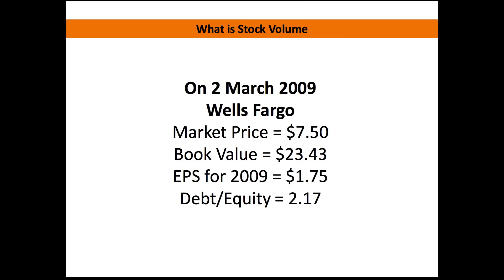Let's look at the numbers on Wells Fargo back on that day of enormous volume. The market price was $7.50. The book value on the company was $23.43. The earnings per share back in 2009 was $1.75, so it wasn't even in a negative EPS situation — it was positive, and they were also paying a dividend. The debt to equity was 2.17. Now, I know I've said you want to find a company with a debt to equity below 0.5, but in the finance sector this is actually extremely low, because their business is debt.